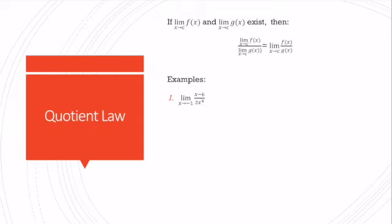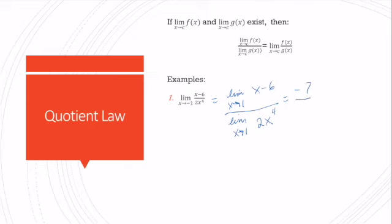We also have a quotient law: the limit of a function over the limit of another function equals the limit of the rational function. Here I take the limit as x goes to 1 of (x − 6) divided by the limit of 2x⁴. That gives me (1 − 6) = −5... actually substituting 1 into the numerator: 1 − 6 = −7, and 2(1)⁴ = 2, so the answer is negative 7/2.